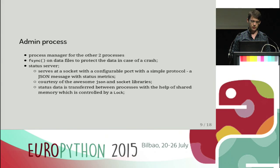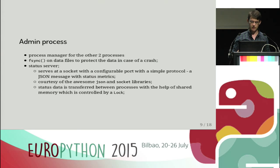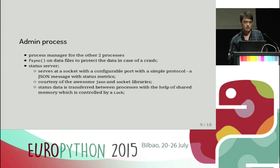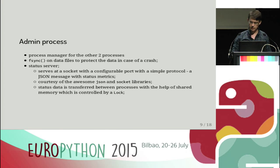Another function of the administration process is to fsync the data files — the access file and the bin log file. The fsync function synchronizes the virtual memory of a file with the actual disk content, meaning the file is persisted after the fsync call. That is extremely important for data persistence. The last important function is to serve status data at a configurable port, using a simple protocol that accepts every request and serves JSON status data collected from the other two processes through shared virtual memory controlled by a multiprocessing read-write lock.